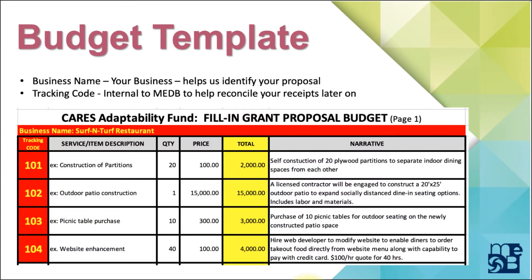The first thing you'll want to do is to put your business name at the top. I'll highlight items in red to help you understand the areas that I'm talking about. If you have to use both pages, remember to put your business name on both pages. The tracking code on the left is internal to MEDB and is there to help track receipts later down the road. Please don't change the tracking code numbers — they're there to help us later.